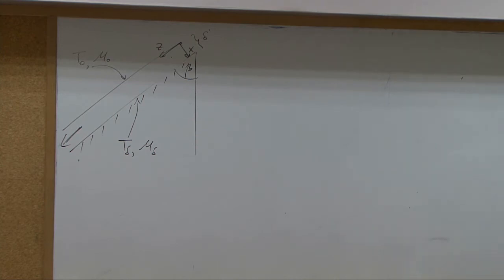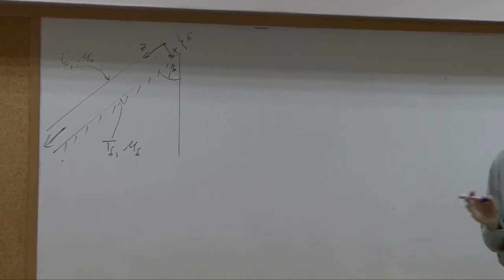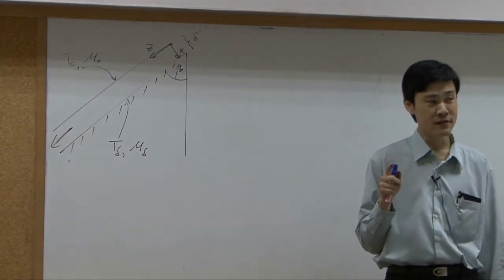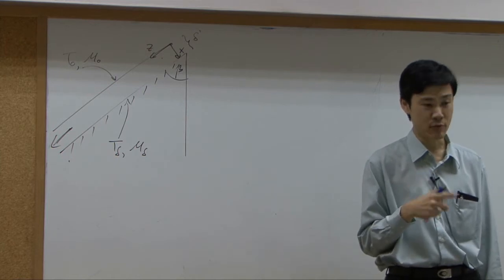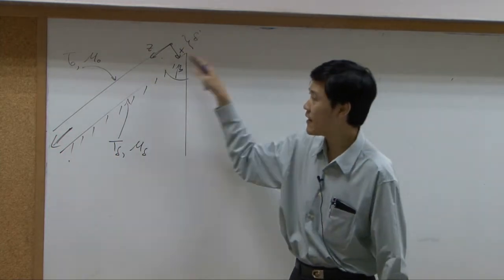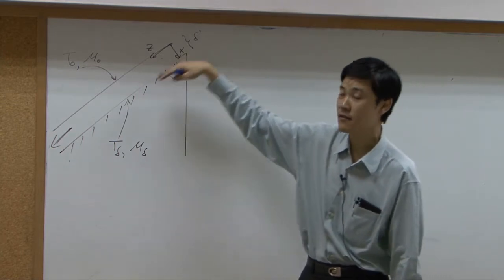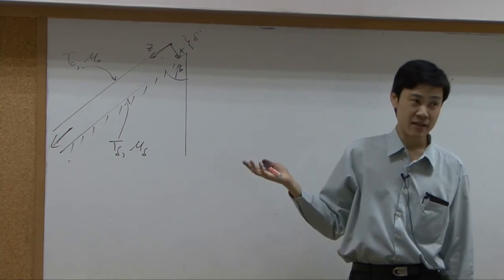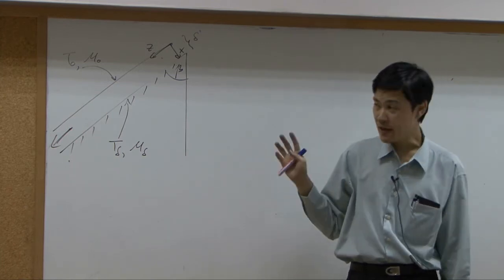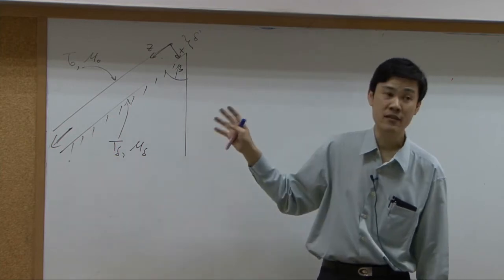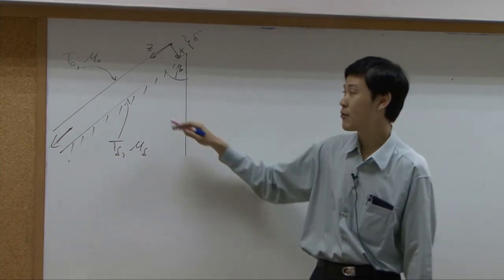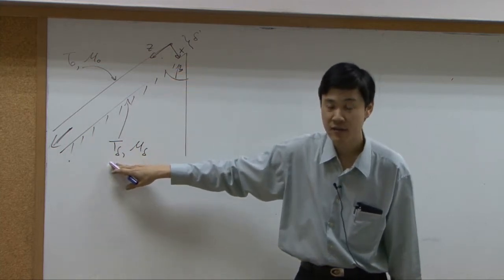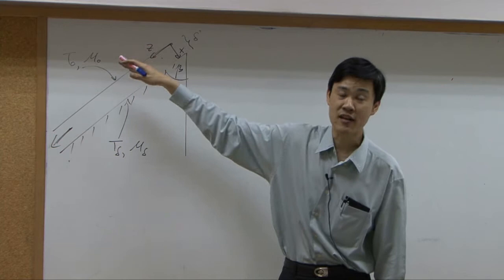Next example: we have an inclined plane, just like our very first example in momentum transport. You have an inclined plane and then some water flowing above the plane. But in this case, the system has a difference in temperature. The temperature of the plane itself is T_delta, and the temperature of the air outside is T_0.